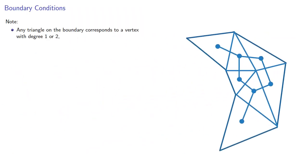We note the following. Any triangle on the boundary corresponds to a vertex with degree 1 or 2, depending on how many triangles it's adjacent to. Meanwhile, any triangle on the interior corresponds to a vertex with degree 3.